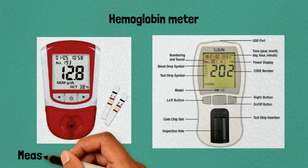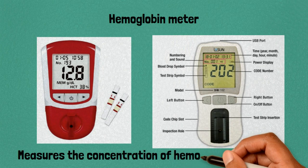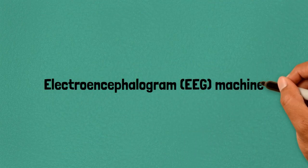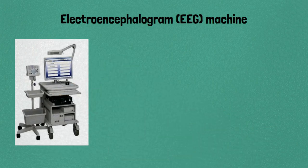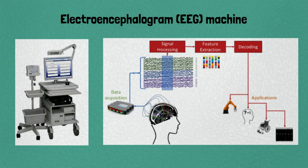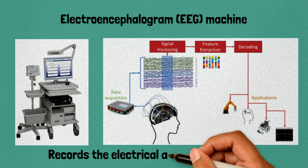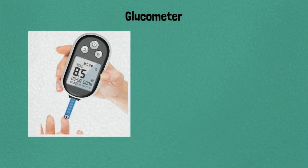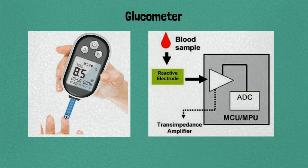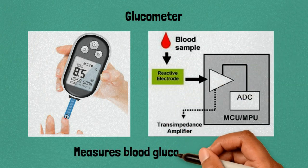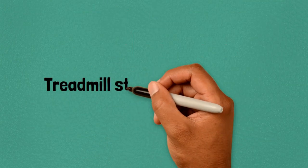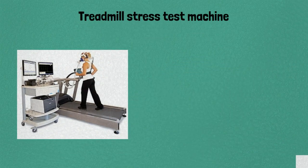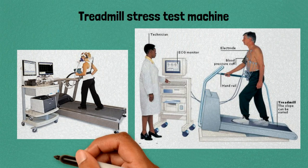Twenty-two: hemoglobin meter, measures the concentration of hemoglobin in the blood. Twenty-three: electroencephalogram machine, records the electrical activity of the brain. Twenty-four: glucometer, measures blood glucose levels. Twenty-five: treadmill stress test machine, evaluates heart function during exercise.